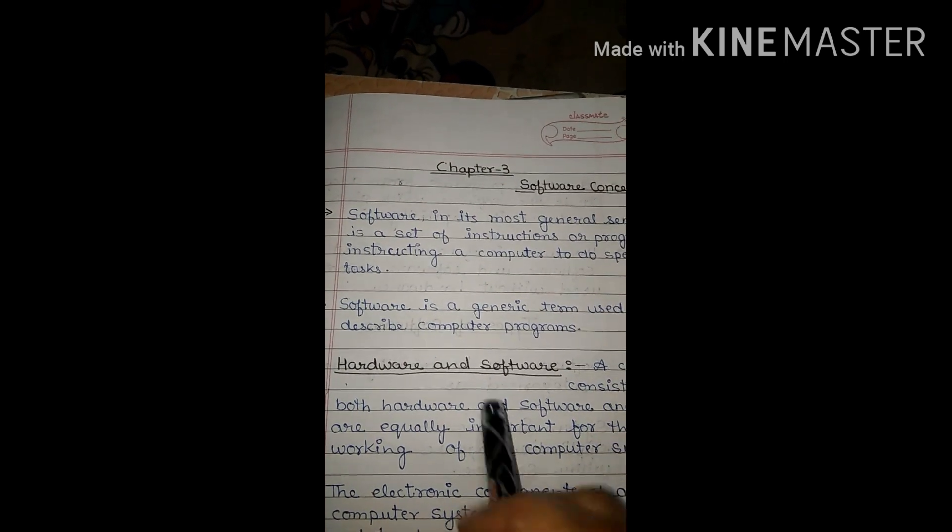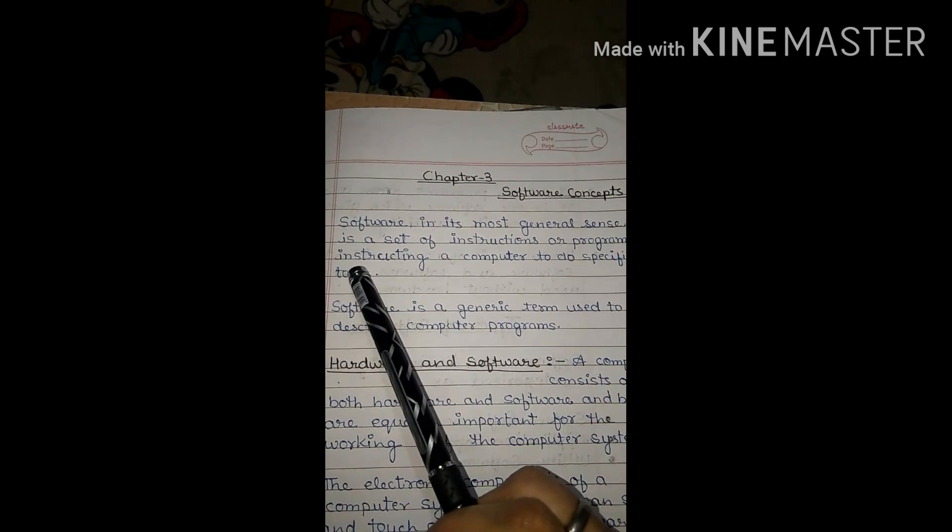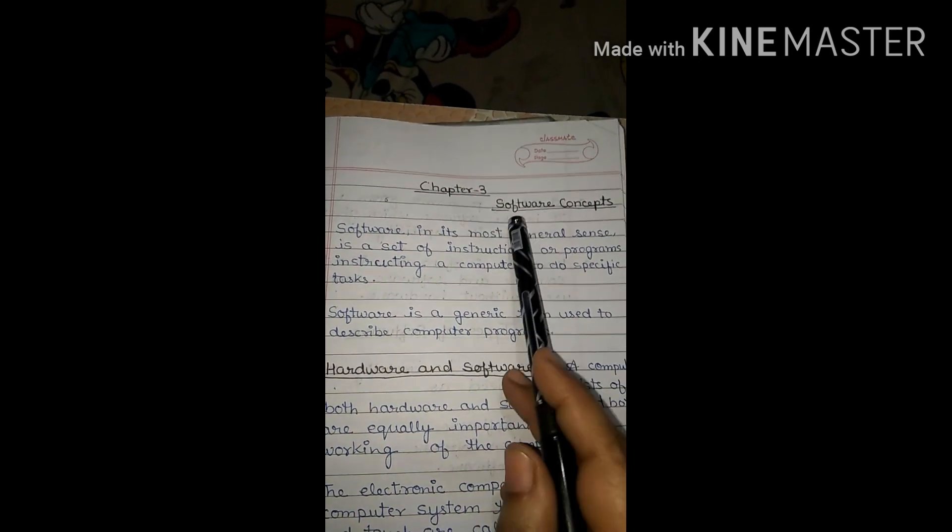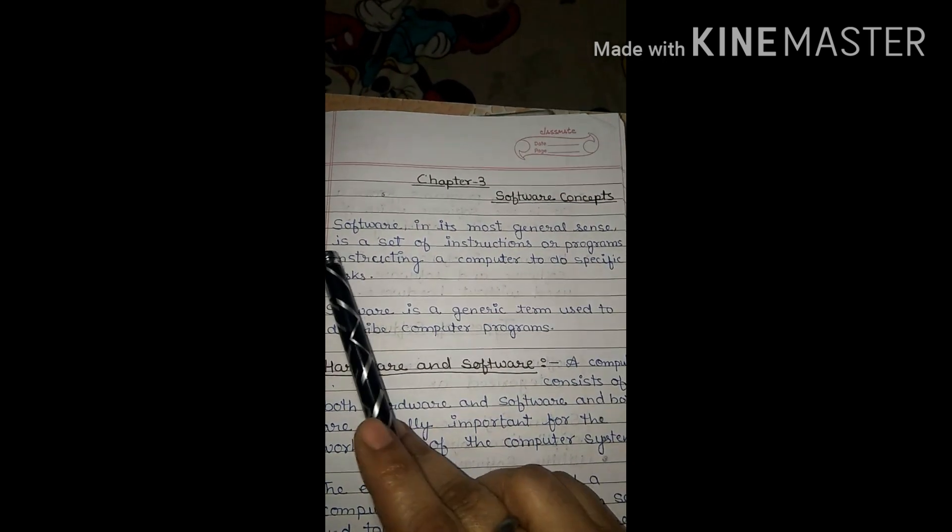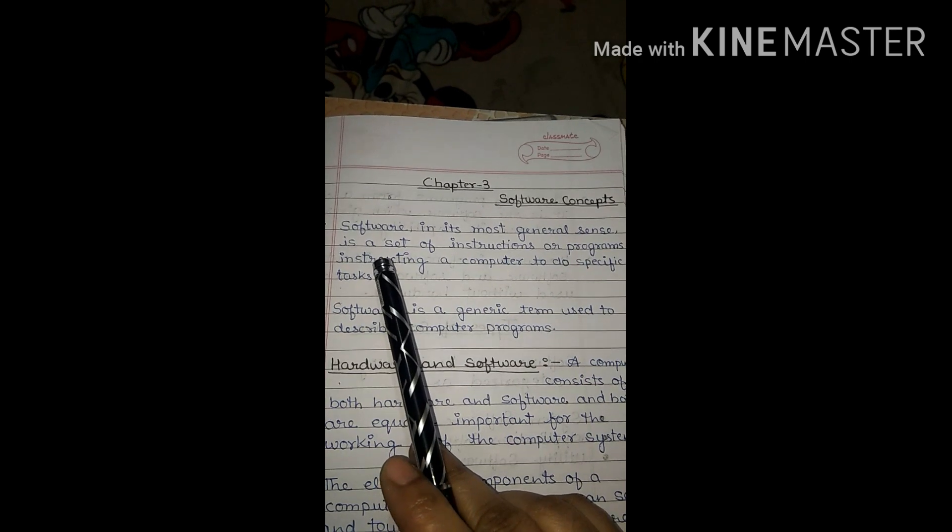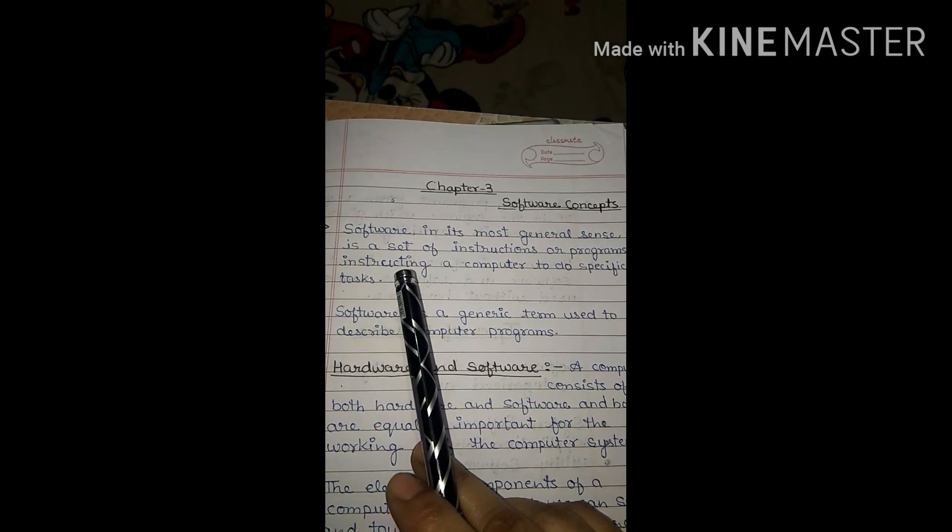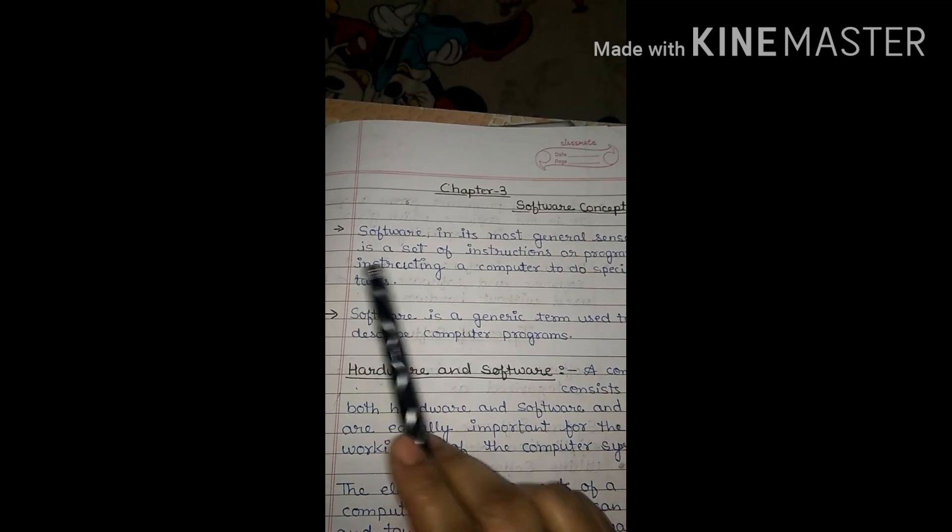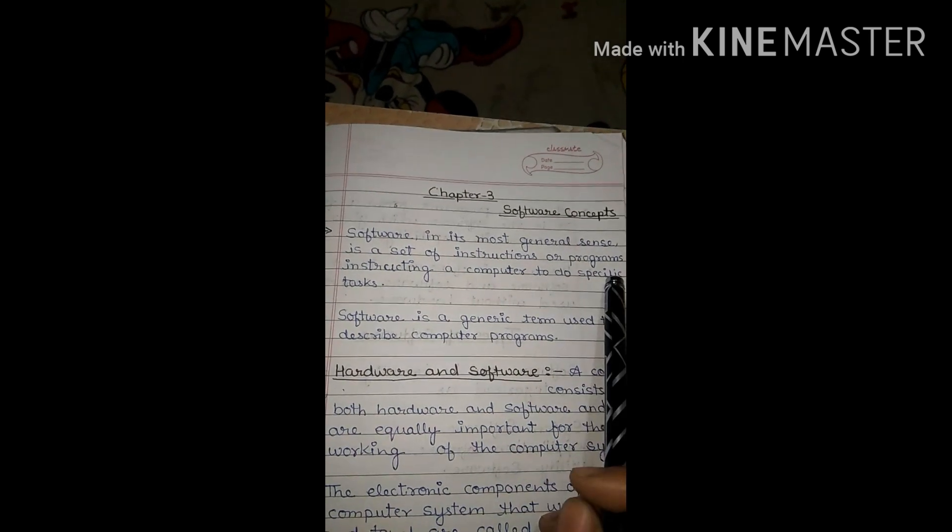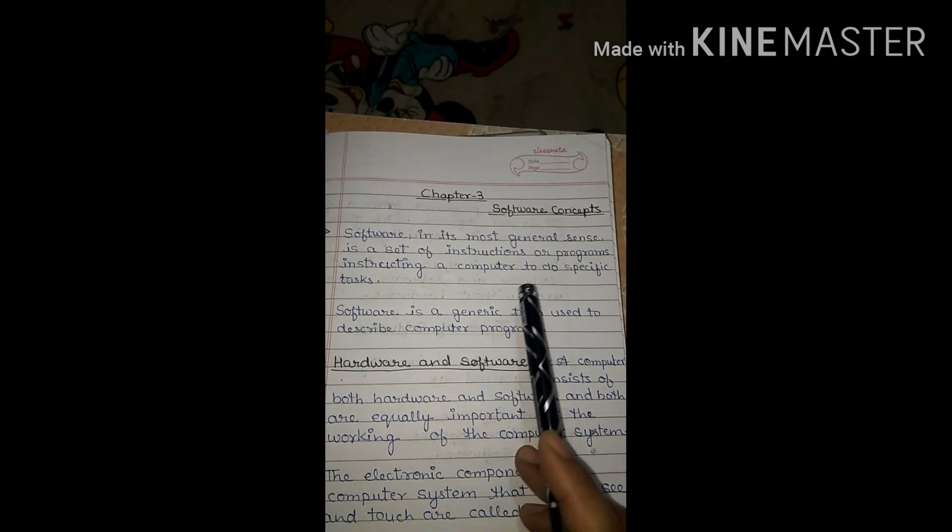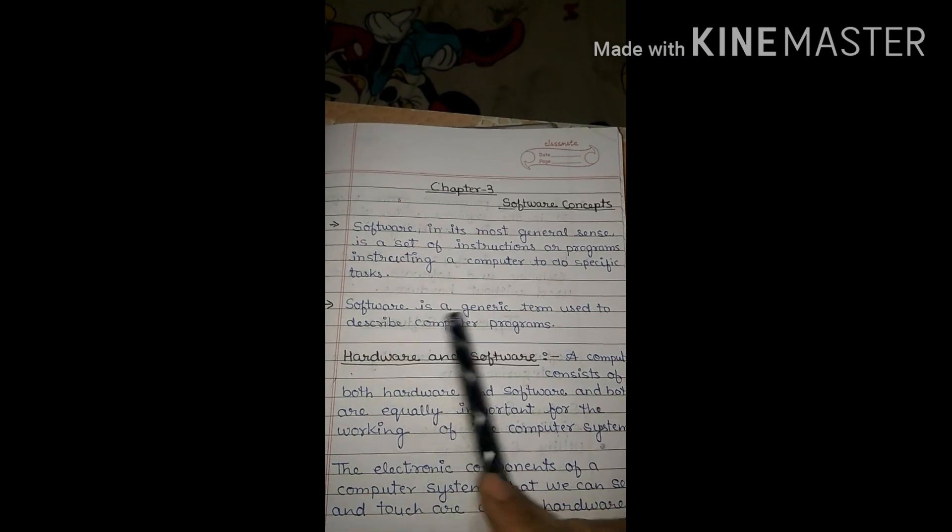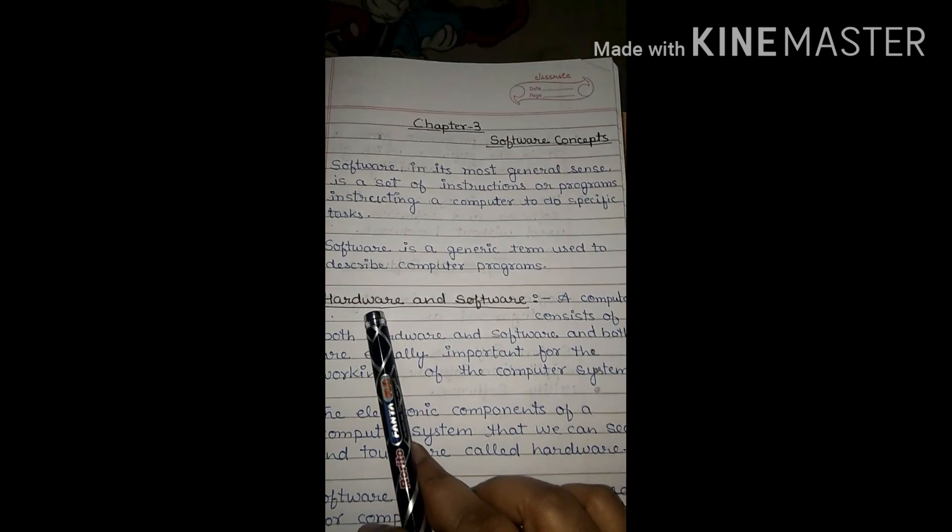Good afternoon students, computer period has been started. Today I'm going to the next chapter, Chapter 3: Software Concepts. In this video we're going to understand some basic concepts about software. So let's start. Software, in its most general sense, is a set of instructions or program instructing our computer to do a specific task. Software is the generic term used to describe computer programs.